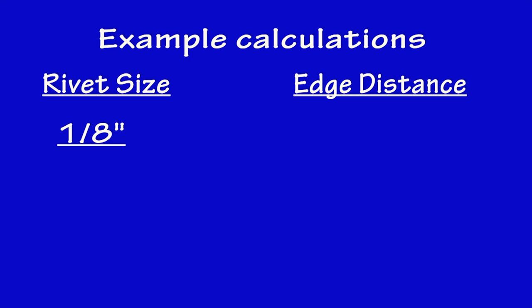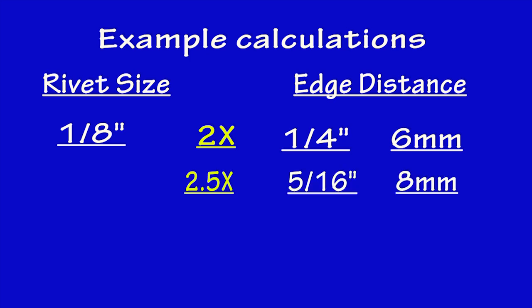If our rivet size is one-eighth inch, which is a popular pulled and driven rivet size in many aircraft, what is the minimum edge distance we can use for this one-eighth inch rivet? If we use two times the diameter, that would be one-quarter inch as measured from the center of the rivet to the edge. If we use the metric system, this would translate to very close to six millimeters. If we want to use the two and a half times the diameter, then the edge distance should be five-sixteenths of an inch or eight millimeters.